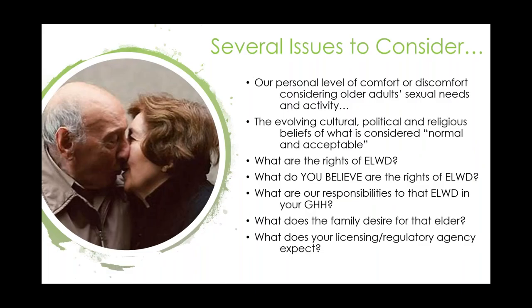Several issues we'll touch on today: our personal level of comfort or discomfort when considering older adults expressing their sexual needs and preferences; how cultural, religious, and political beliefs are evolving — certainly in the last 20 to 30 years there's been a lot of evolution; the rights of elders living with dementia; what a policy should say; the involvement of the family and their desires; and the regulatory rules and expectations surrounding sexual expressions of people living with dementia.